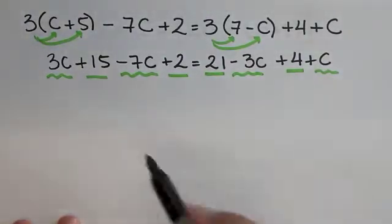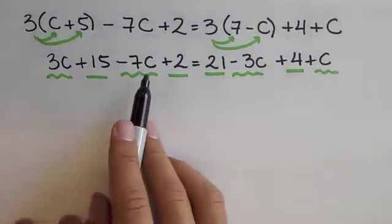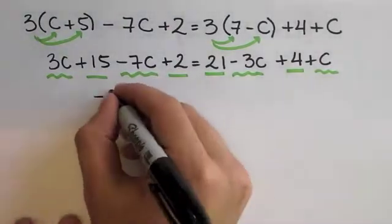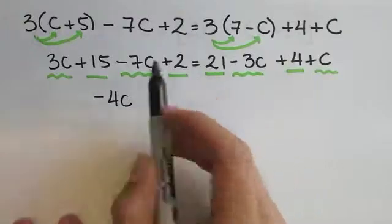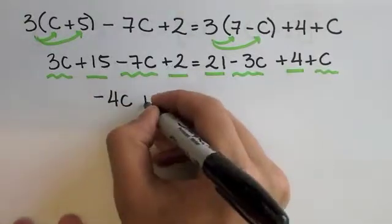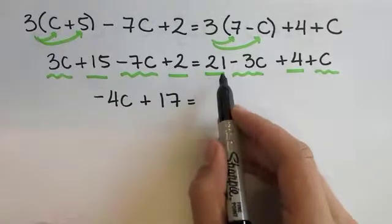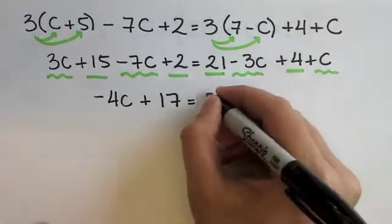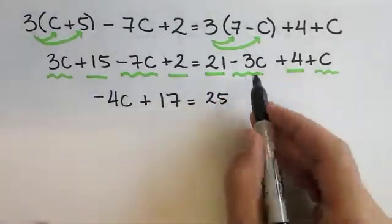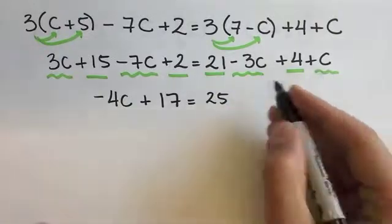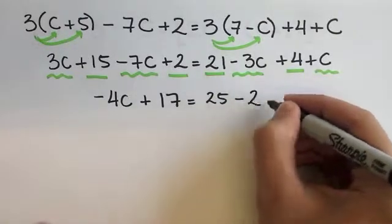When we perform these operations, 3c minus 7c gives us negative 4c. 15 plus 2 gives you positive 17. On the right hand side, 21 plus 4 is equivalent to 25. And negative 3c plus c gives you negative 2c.